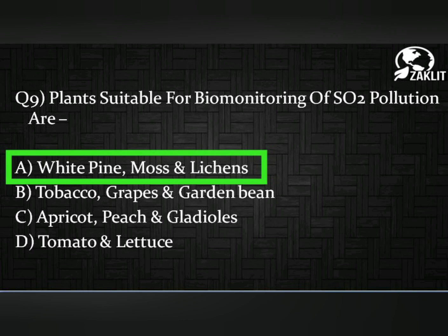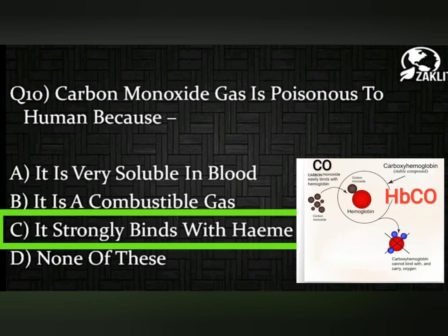The tenth and final question was: carbon monoxide gas is poisonous to humans because — the correct option is option C: carbon monoxide binds with heme, that is the hemoglobin molecule, forming carboxyhemoglobin in the blood, which disrupts the flow of blood and hampers respiration.